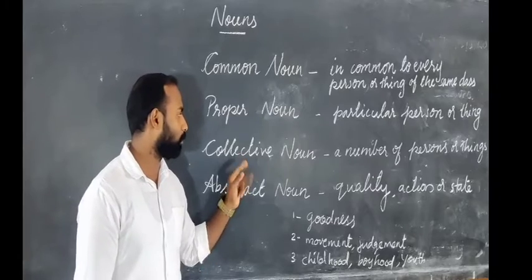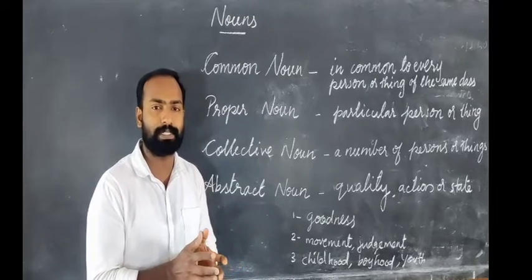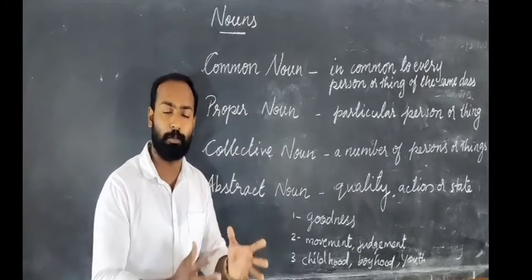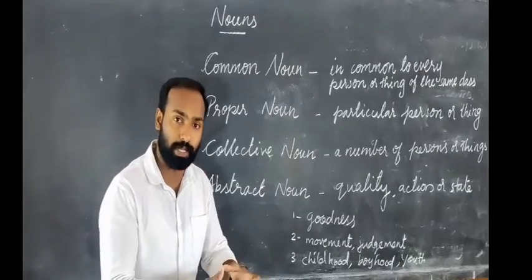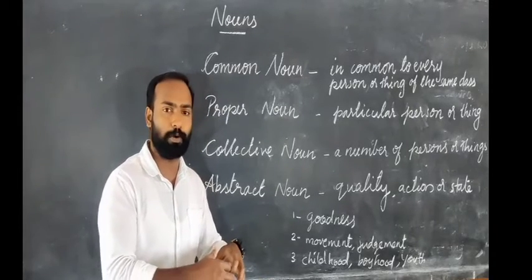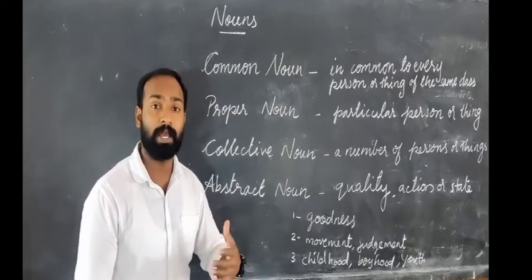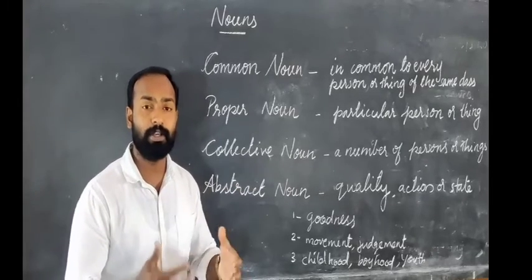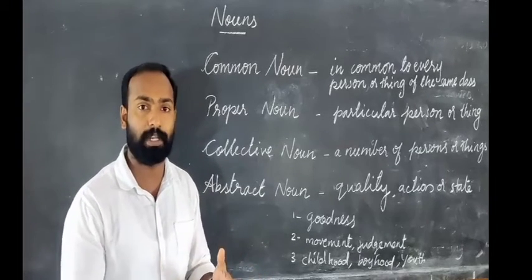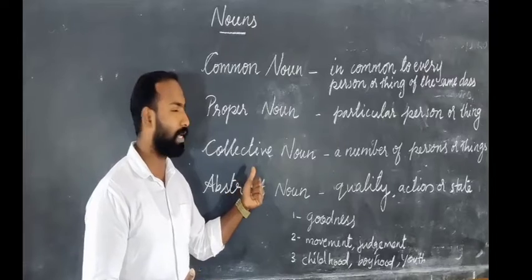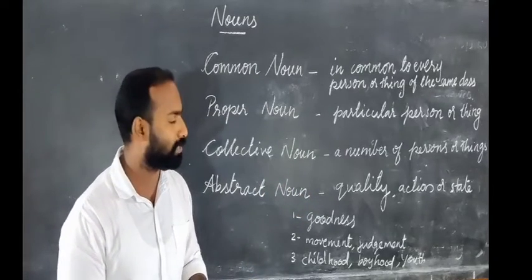Now we are moving to the third one: Collective Noun. A Collective Noun is a noun that can be used for a group or number of persons, things, or animals. When there is a group of the same kind, for example a group of students, we can say 'a class of students.' If there is a group of rats, we say 'a pack of rats.' Other examples include 'an army of soldiers,' 'a colony of ants,' and 'a flock of sheep.' A Collective Noun is a noun used for a group of things or persons of the same kind.